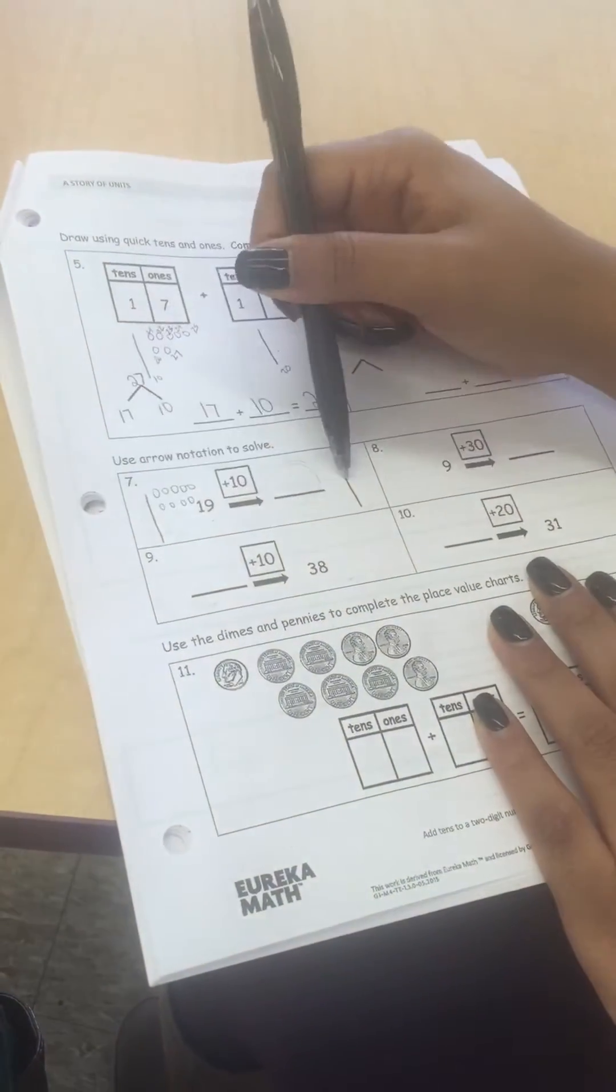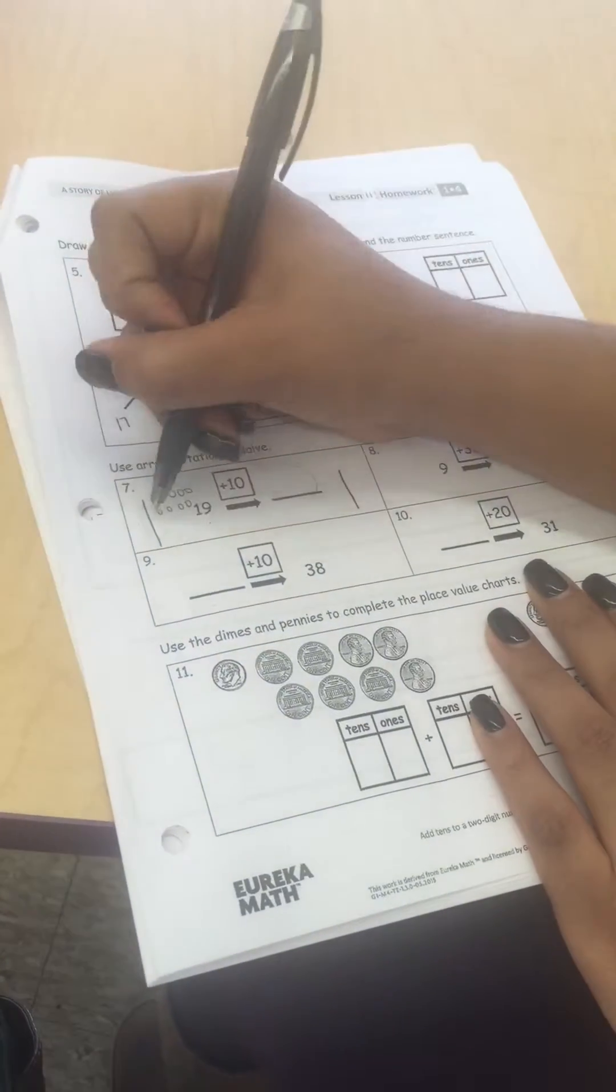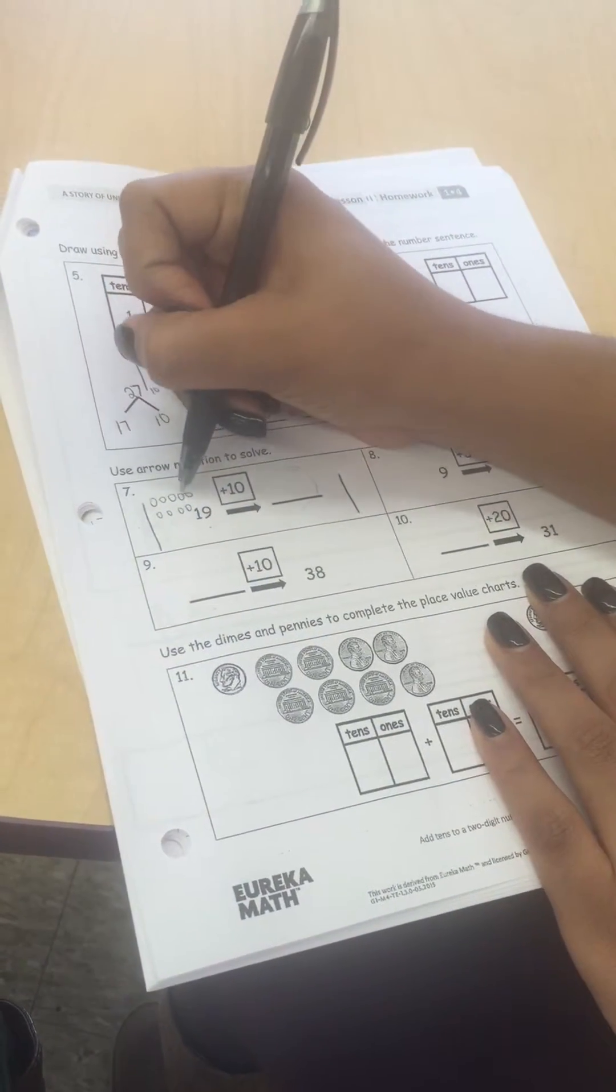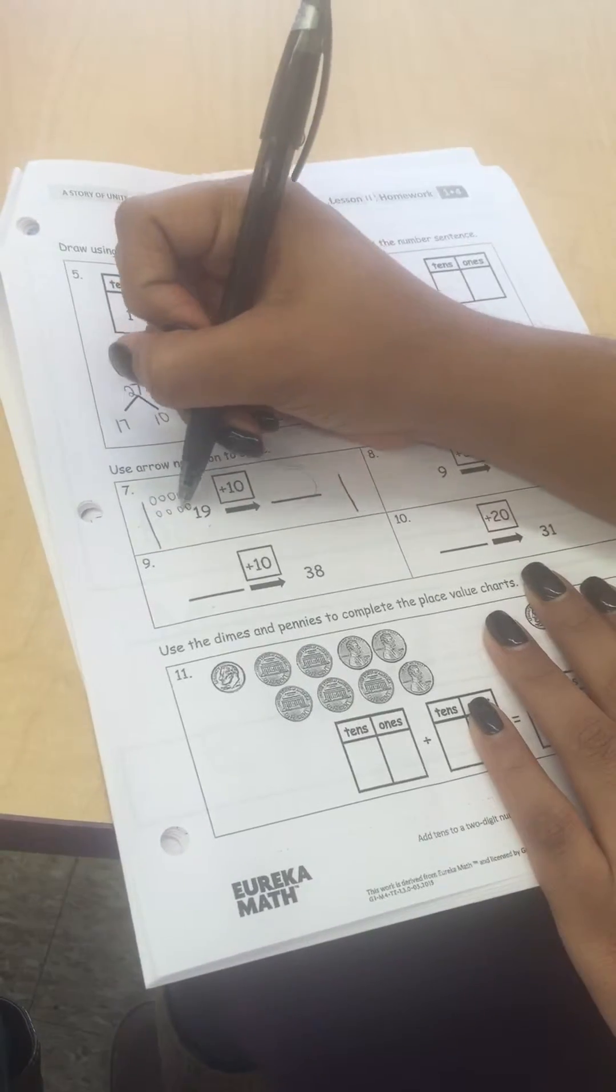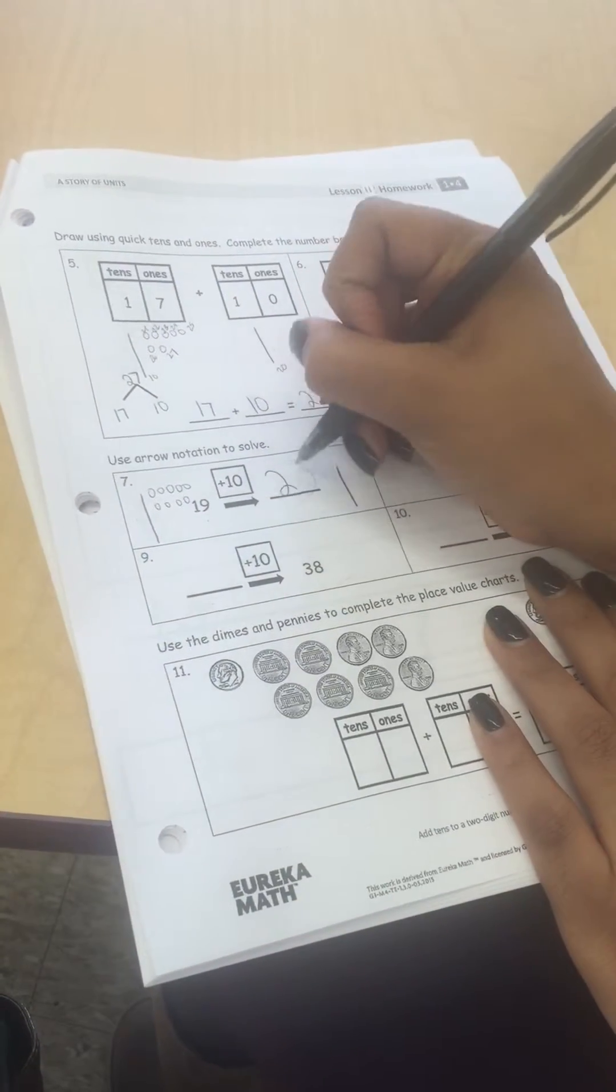Again, I'm going to count my tens first, then go back and count my ones. 10, 20, 21, 22, 23, 24, 25, 26, 27, 28, 29. My total is 29.